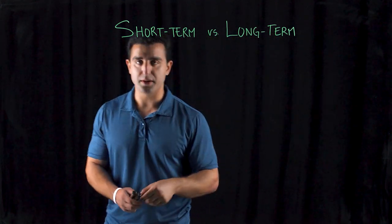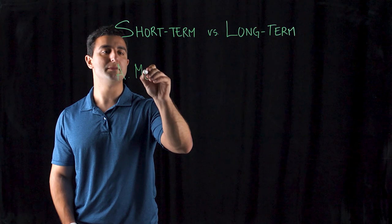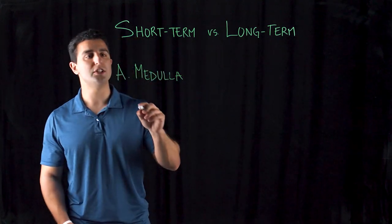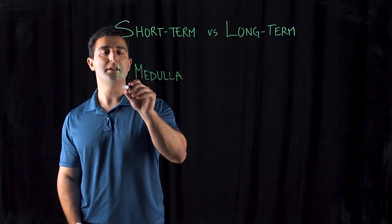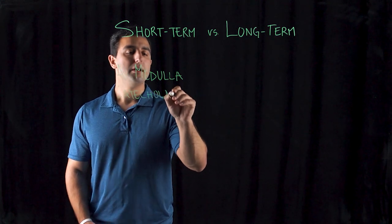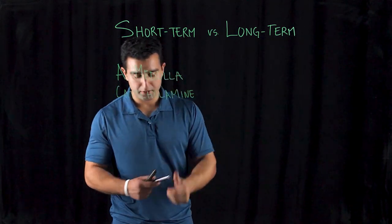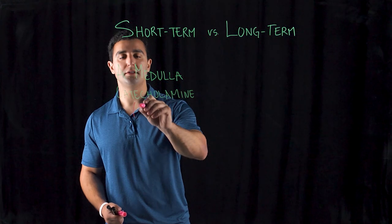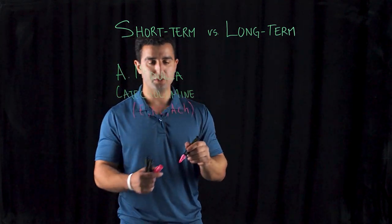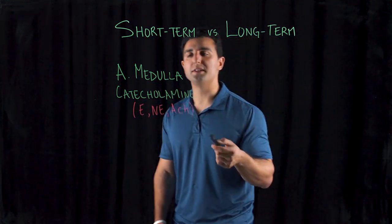Short-term stress involves your adrenal medulla. The adrenal medulla is responsible for the secretion of the catecholamines. Catecholamines are amino acid-derived hormones — examples include epinephrine, norepinephrine, and acetylcholine. Their main function, when secreted during a short-term stress response, is changing the physiology of the body into a sympathetic response.